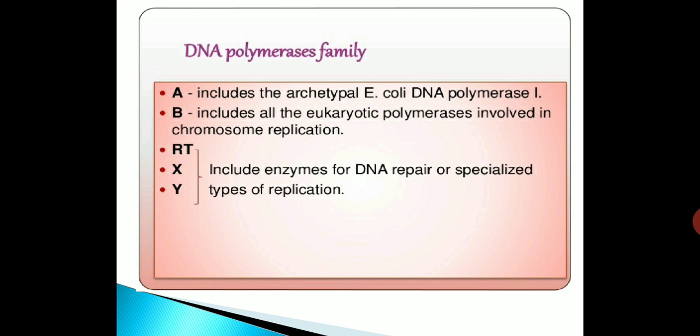The DNA polymerase family is of several types. Family A includes the archetypal E. coli DNA polymerase 1. Type B includes all the eukaryotic polymerases involved in chromosome replication. Next are RT, X, and Y families, which include enzymes for DNA repair or specialized types of replication.